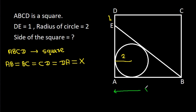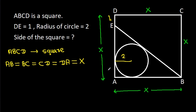So AB is X, BC is X, CD is X, and DA is X. Now, suppose the center of the circle is O, this point is P, this point is Q, and this point is M.